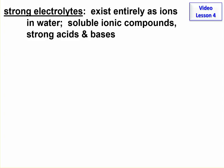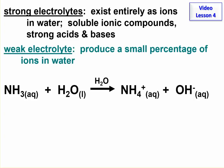We talked about strong electrolytes earlier — that's when a compound exists only as ions when you put it in water. There are also weak electrolytes. Here's an example of a weak electrolyte: it's still an electrolyte, so there are some ions, but not all of it is broken into ions.